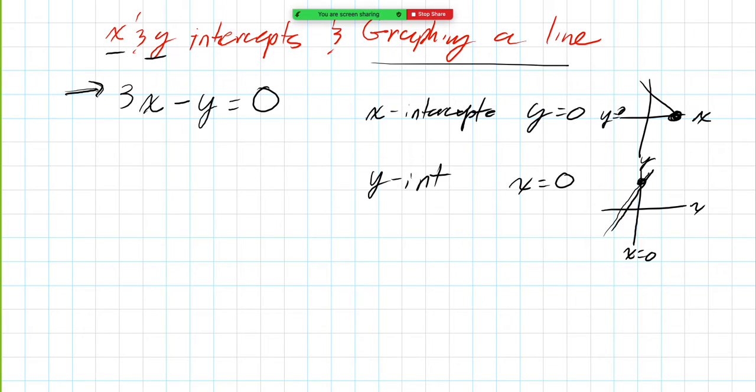For an x intercept, we're going to plug in y is 0. So when y is equal to 0, we'll replace y with the number 0. So we've taken our y in 3x - y = 0, and we've replaced it with 0.